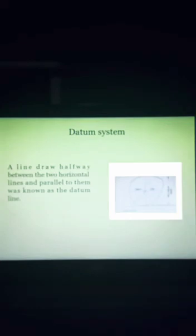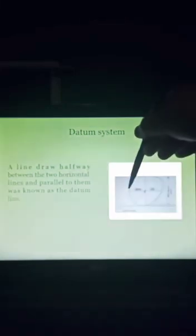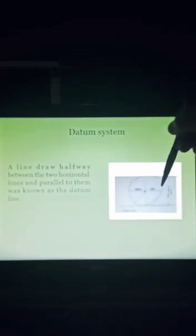Next, a line drawn halfway between the two horizontal lines and parallel to them was known as the datum line. See the diagram. Between these two horizontal lines, now we have drawn a horizontal line in the halfway of the lens. This is called the datum line.